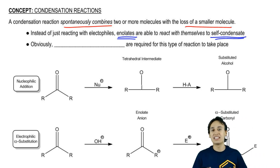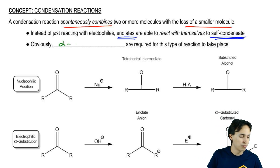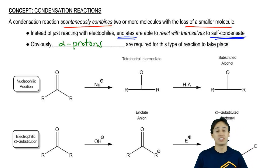Obviously, due to the fact that there's an enolate-mediated reaction, alpha protons are required for this type of reaction to take place because if you don't have an alpha proton, then you're not getting an enolate because an enolate is the deprotonated version of an alpha carbon.